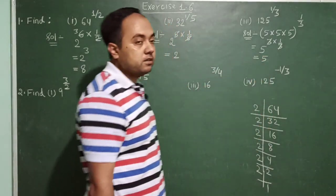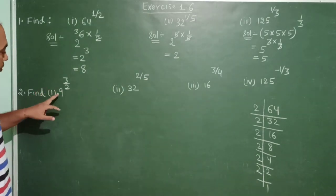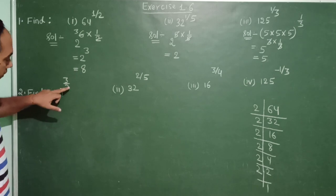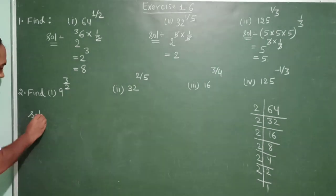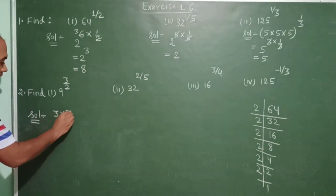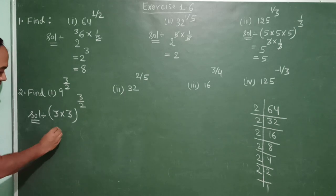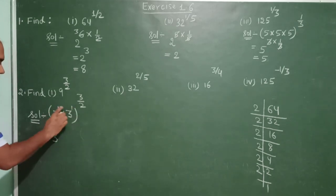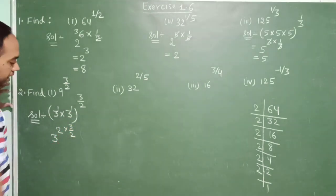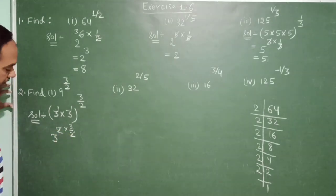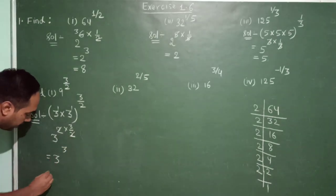Question number 2: find the value of 9 raised to the power 3 upon 2. To calculate this, we need to remove the 2, so we write the prime factors of 9, which are 3 into 3. So it becomes (3 × 3) raised to the power 3 upon 2. Since bases are the same, powers add: 1 plus 1 is 2, giving 3 power 2. Outside it is 3 upon 2 — the 2s cancel, giving 3 raised to the power 3.